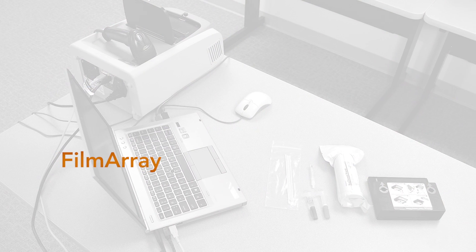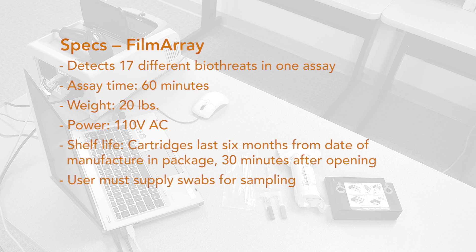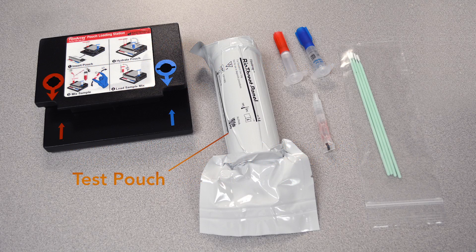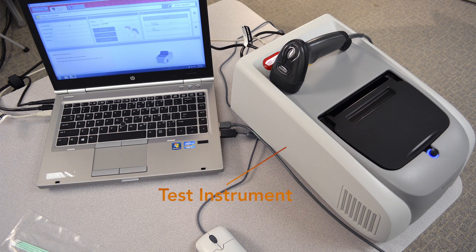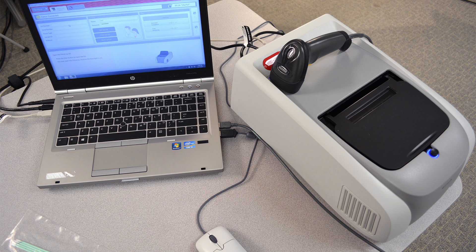The FilmArray is a polymerase chain reaction-based detection system that uses a PC-connected instrument to test a single sample for the DNA of 17 pathogens. This kit includes a test pouch, reagents, loading station, and test instrument. Users must supply their own swabs for sampling.